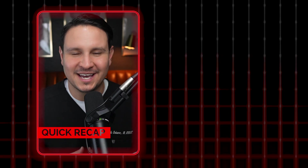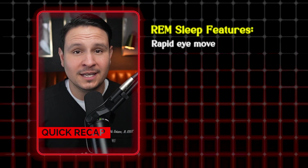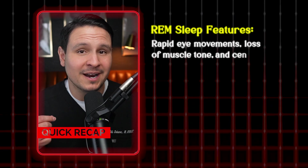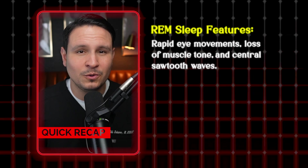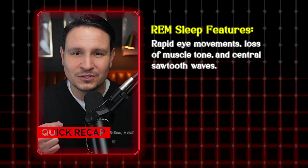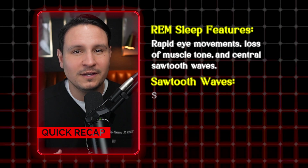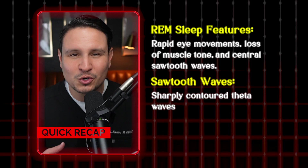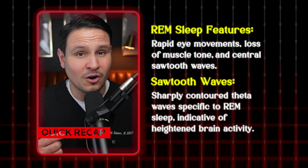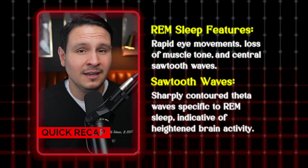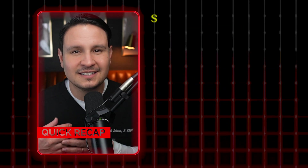Let's recap. REM sleep features: in REM, you have rapid eye movements, loss of muscle tone, and central sawtooth waves. Sawtooth waves are sharply contoured theta waves specific to REM sleep, indicative of heightened brain activity.